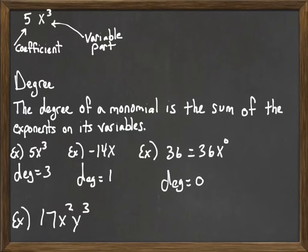Now, things are just a little bit more involved if we have multiple variables. That's where we actually add up the exponents when we have multiple variables involved in one monomial. So we just add them up. 2 plus 3 equals 5. So 17x squared y cubed has degree 5.